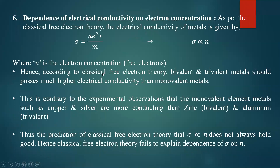Sixth point: dependence of electrical conductivity on electron concentration. According to classical free electron theory, sigma = ne²τ/m, so sigma is directly proportional to n, where n is the electron concentration — the number of free electrons per unit volume. Hence, according to classical free electron theory, bivalent and trivalent metals should possess much higher electrical conductivity than monovalent metals.